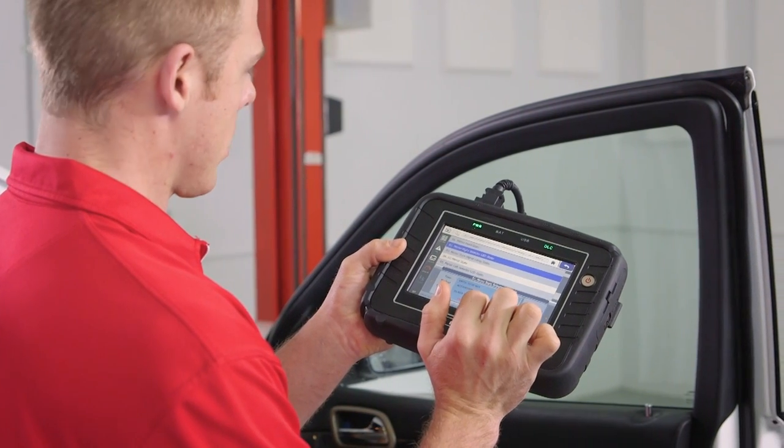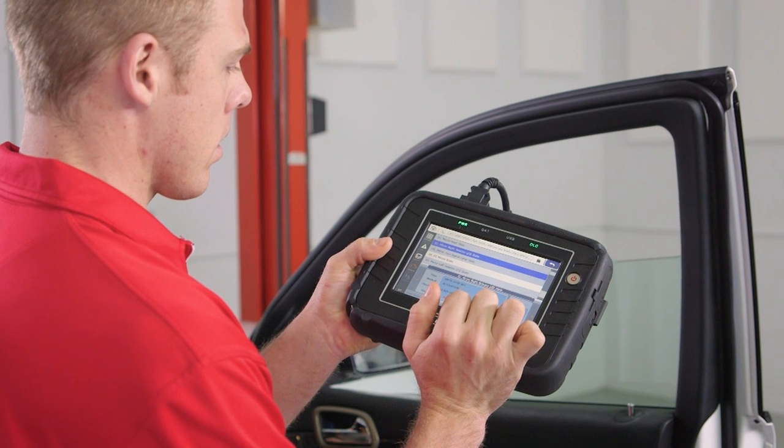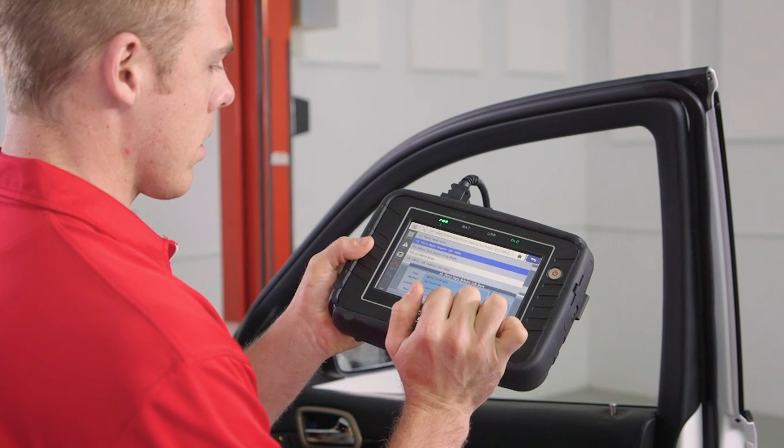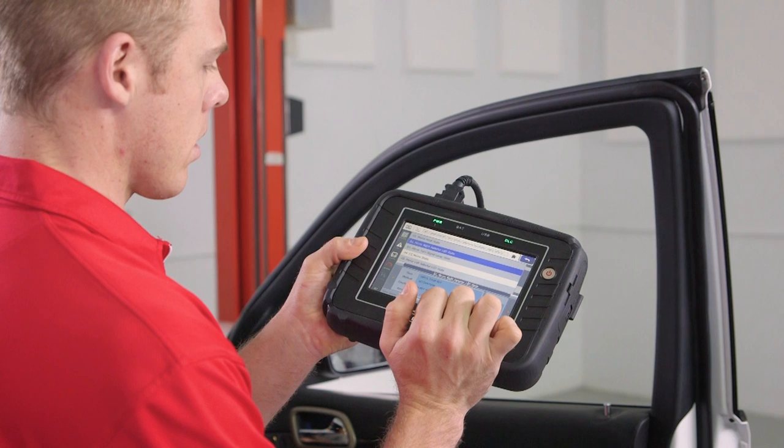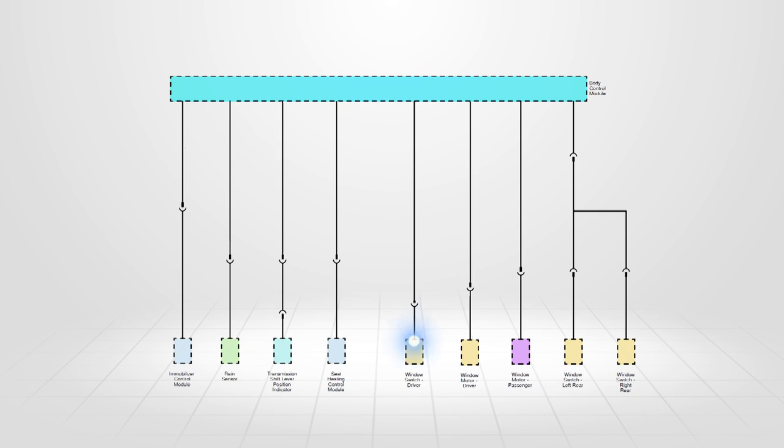Scan tool communication to the slave device is done through the gateway. Again, this is generally the body control module or the bus master. If a node or slave goes offline or drops out, the master will know as it's always communicating with the device.